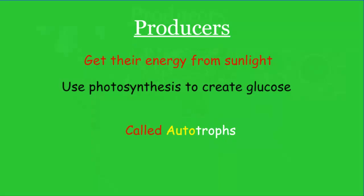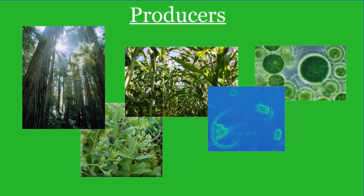Here are some pictures of some producers. You can see they come in various sizes, shapes, and forms, but they all have something in common: they are taking in the sun and producing molecules of glucose. This ranges from large redwood trees all the way down to phytoplankton and algae that live in water. All of them are important food sources for food chains and food webs within ecosystems, holding that same role of converting sunlight into chemical energy.